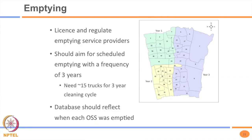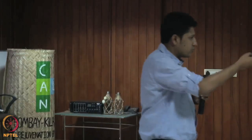The database should reflect when each OSS was last emptied. Alternatively, a zone-based plan can be used: if emptying every 3 years, divide the city into 3 zones, emptying zone 1 in year 1, zone 2 in year 2, zone 3 in year 3, then cycling back. This works if population and households are roughly equal across zones, and is a viable alternative if geotagging proves too difficult.